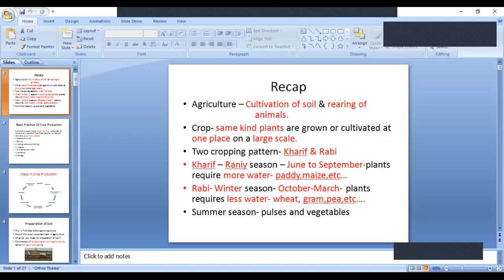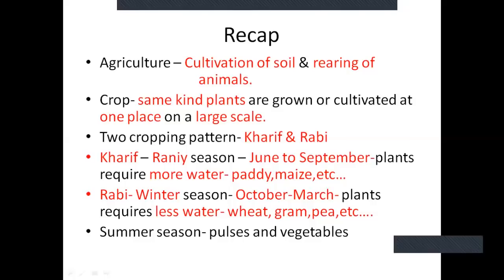The first concept was about the word agriculture. Agriculture is nothing but cultivation of soil and rearing of animals — rearing of animals for food and other products that we get from animals. The next very important word dealing with this chapter is crop. What is a crop? If the same kinds of plants are grown or cultivated at one place on a large scale.